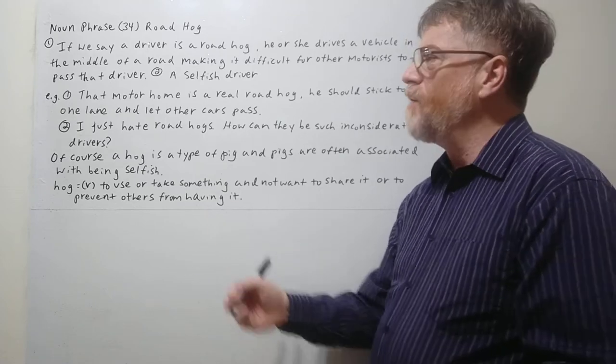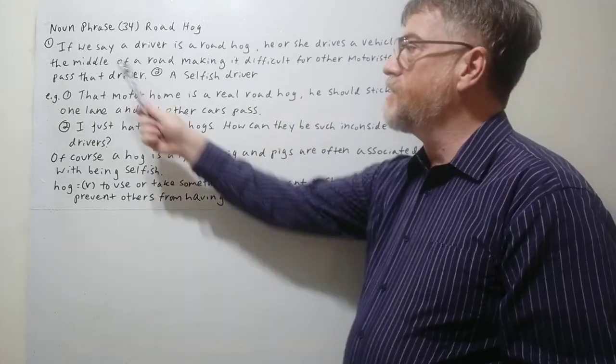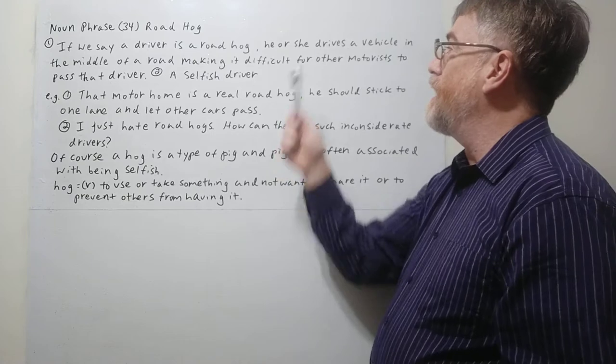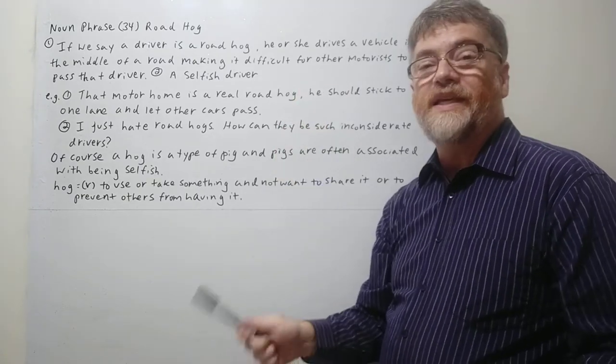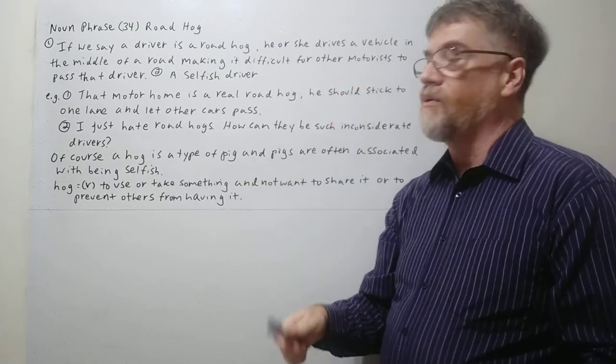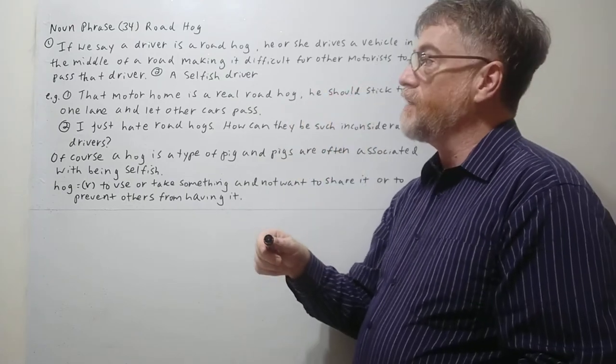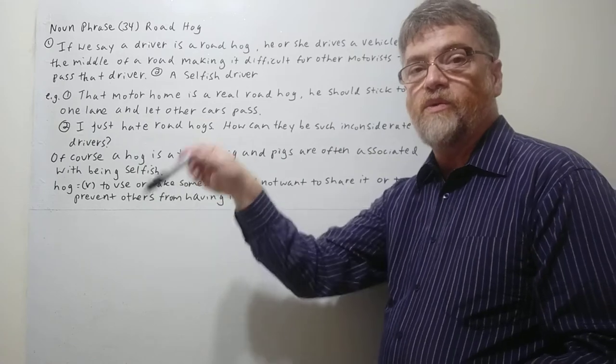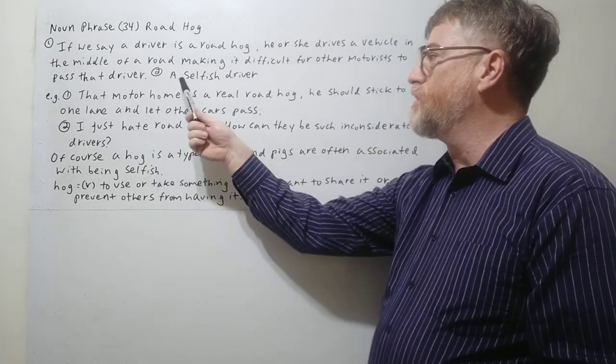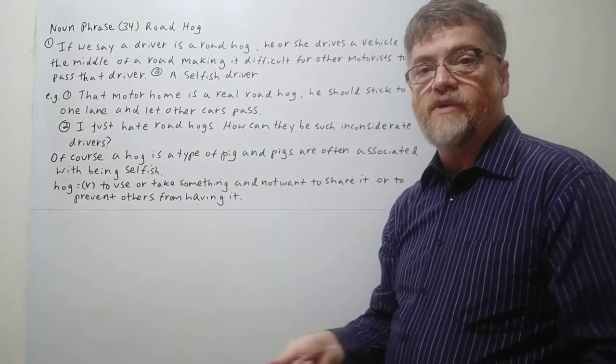Let's take a look at the note. We actually have two meanings. Let's look at the first one. If we say a driver is a road hog, he or she drives a vehicle in the middle of the road making it difficult for other motorists or other drivers to pass that driver, the one who is the hog of course. And in general we can also just simply say a selfish driver could be a road hog.